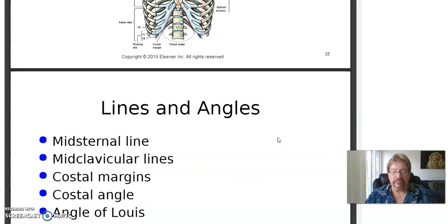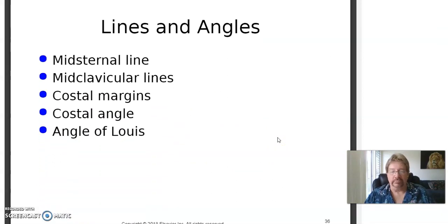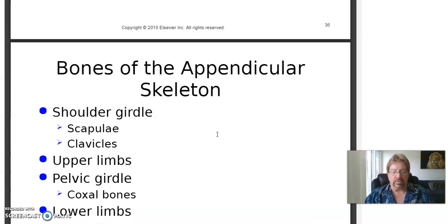Lines and angles. Midsternal line, midclavicular lines. The collar bones are clavicles, so there's a midsternal line right down the sternum, midclavicular lines about where the nipples are. Costal margins, costal means rib. Costal angle, angle of Louis. Where the manubrium and the body of the sternum come together, there's an angle right here you can palpate or feel. That's the angle of Louis. It's important because it's a good anatomical landmark. If you have to count rib spaces and stuff, you can start here. The angle of the ribs is also important.